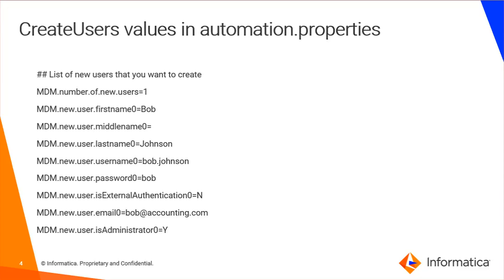To create users from the automation tool, you need to specify some properties in the automation.properties file. Those include how many users you want to create — the property called 'number of users' — the user first name, user middle name, user last name, and the unique name for that user called the username, and the password. If your user exists at the LDAP level, you don't need to pass the password. To enable that, set 'each external authentication' to Y. You also need to provide the user email address and whether the user should be created as an administrator.